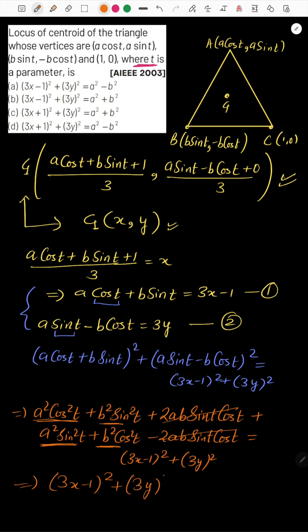So the locus is: (3x - 1)² + (3y)² = a² + b². Clearly, the correct answer is choice B. So B is the correct choice for this question. I hope you understood this question. Thank you so much for watching this video.